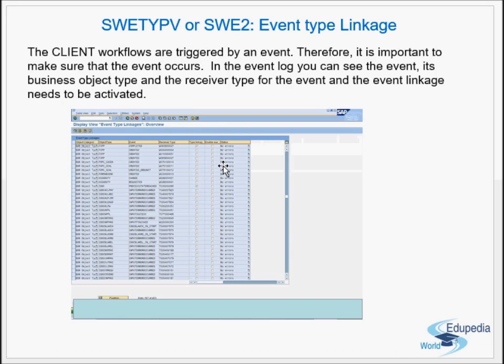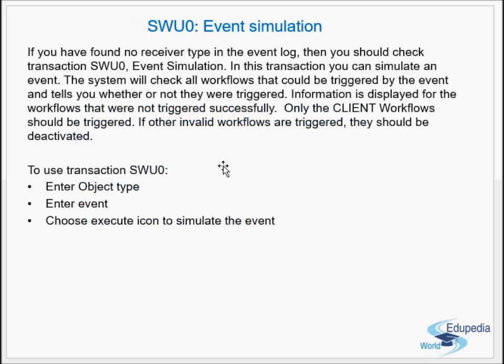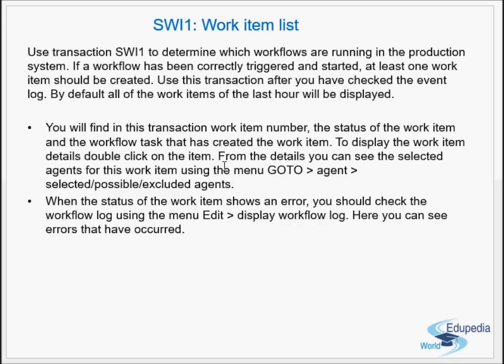SWE2 handles the event type linkage — an event can trigger multiple workflows, so we activate the corresponding event linkages based on requirements. SWU0 is used to simulate an event. SWI1 shows the work item list — the primary monitoring transaction where we see all work items and their details for error analysis. This concludes Part 4 of SAP Workflow, a continuation of the transactions discussed in Part 3.